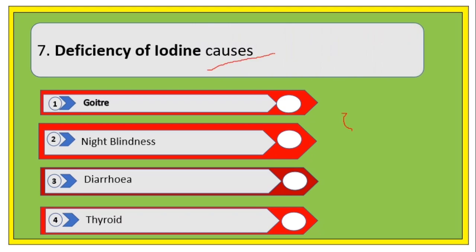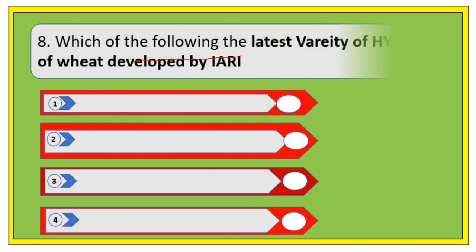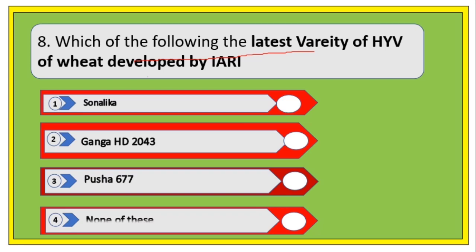Next question: deficiency of iodine causes which of the following? Options are goiter, night blindness, diarrhea, and thyroid disorders. The right answer is goiter.